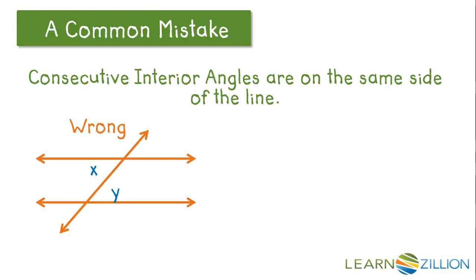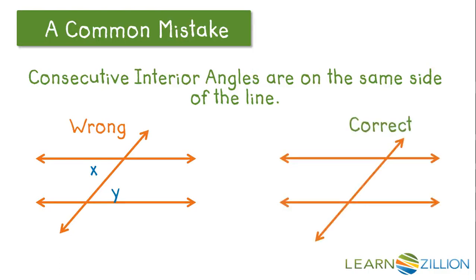In order for them to be consecutive interior angles, we would have to correct our diagram so that we still have three lines — two parallel lines intersected by a third — but now angle X and angle Y are on the same side of the line. So we can say that they are consecutive interior angles.